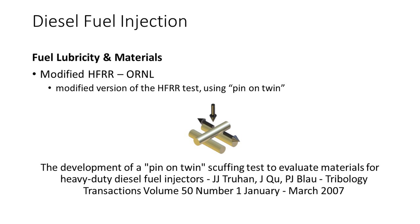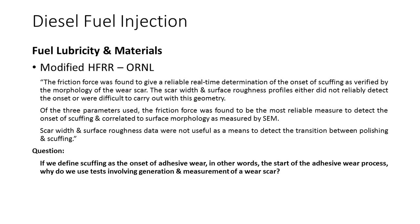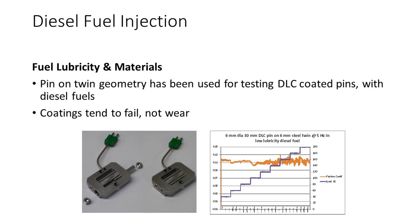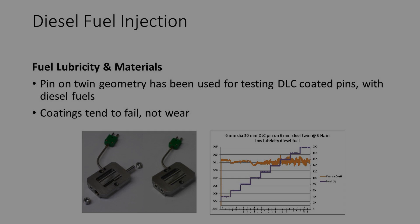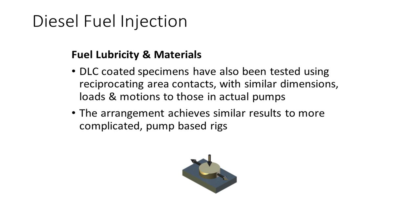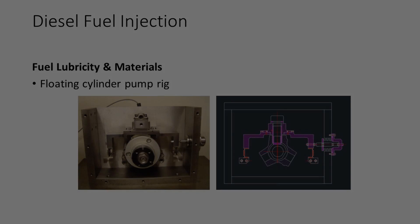Various diesel fuel lubricity tests exist. Methods include ASTM D6078, the scuffing load BOCLE test, and ASTM D6079, the HFRR fuel lubricity test. This standard includes the note: it is not known that this test method will predict the performance of all additive-fuel combinations. SWRI have been working on a modified version of this test using a line contact with claimed improved sensitivity. ORNL devised an alternative reciprocating test geometry, the pin-on-twin. This raises an interesting point: if we define scuffing as the onset of adhesive wear, why do we use tests involving generation and measurement of a wear scar? The pin-on-twin geometry has been used for testing DLC coated pins with diesel fuels. DLC coated specimens have also been tested using reciprocating area contacts with similar dimensions, loads and motions to those in actual pumps.